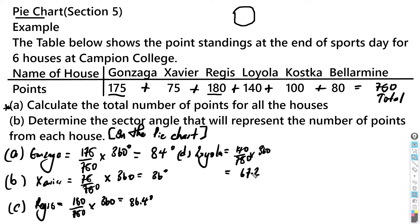Then E is Kostka, which is equal to 100 over 750 multiplied by 360, which should be equal to 48 degrees.